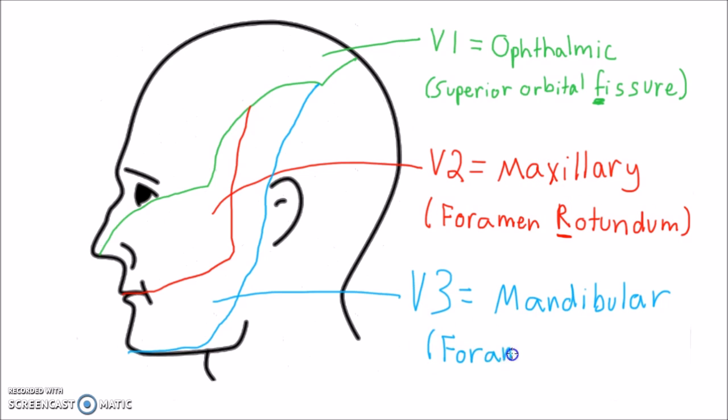I like to remember these foramina by the phrase 'to and fro'. The areas that the nerves cover are called the ophthalmic area, the maxillary area, and the mandibular area.